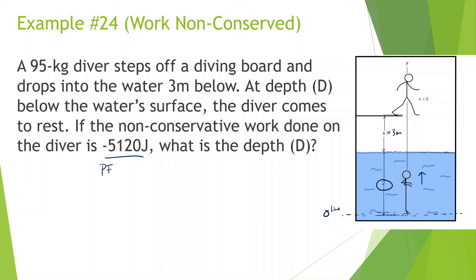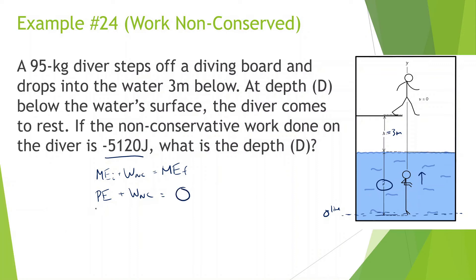Let's do the full equation: mechanical energy initial plus work non-conserved equals mechanical energy final. At the beginning, he has potential energy — a certain height. He drops, so no kinetic energy, no spring energy. There is work non-conserved from the water. At the end, there's no potential energy — he's at the zero line — no kinetic energy since he comes to a stop, and no elastic potential energy. So everything on the right is zero: MGH plus work non-conserved negative 5,120 equals zero.